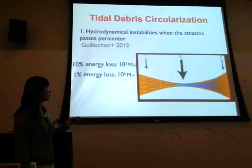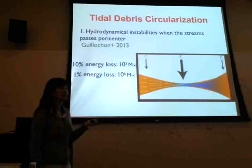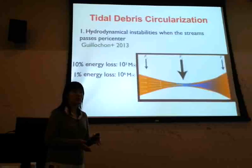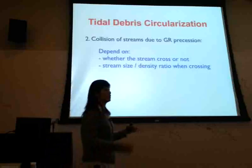From those simulations, the energy loss in the first orbit is not very large — roughly about one percent around a supermassive black hole. That is not very effective in circularizing the tidal debris.